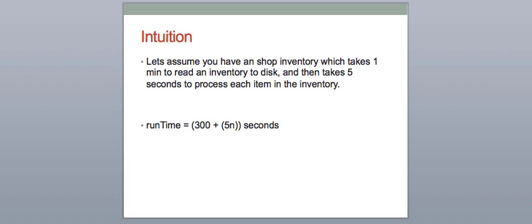Let's start talking about intuition first. Say you have an inventory which takes one minute to read the inventory to disk, and then takes five minutes to process each of those items in the inventory. We can say that the total runtime is 300 seconds plus 5n seconds, where n is the number of items. While to the naive passerby it may seem that the bottleneck is actually in the act of reading an inventory item to disk — i.e. 300 seconds — the truth is that the number of inventory items is the real bottleneck.